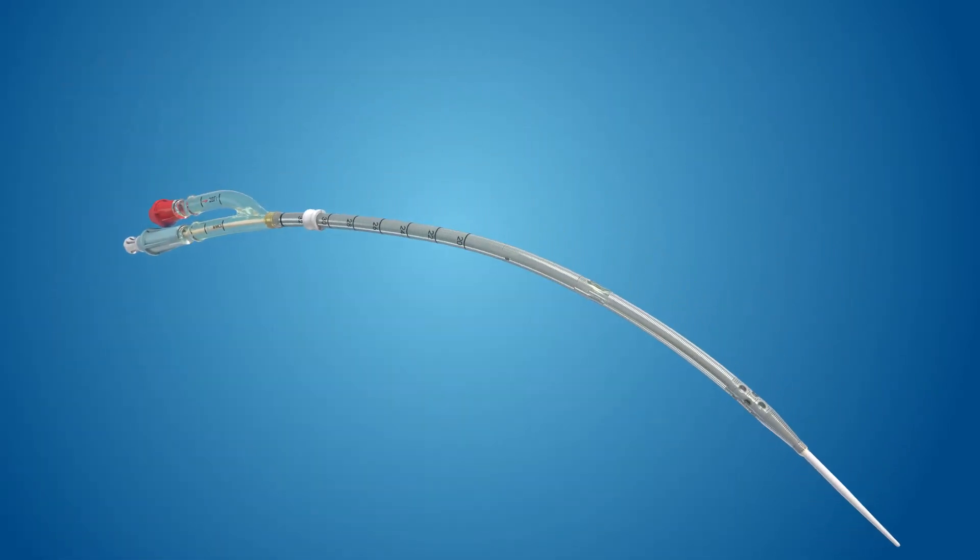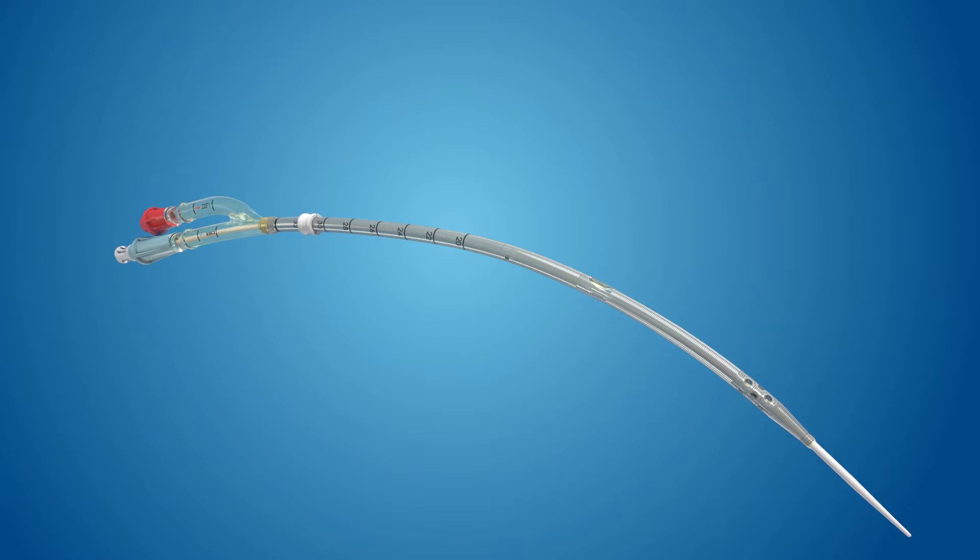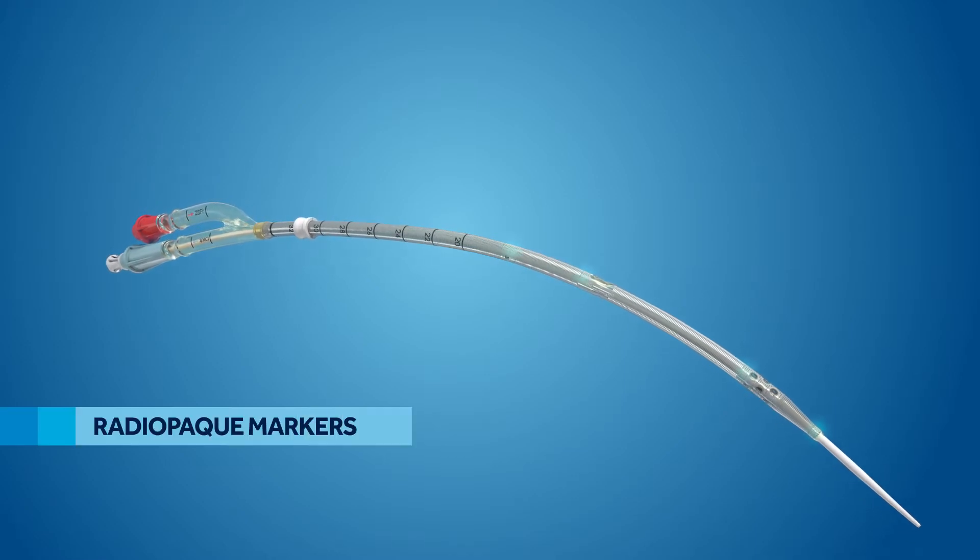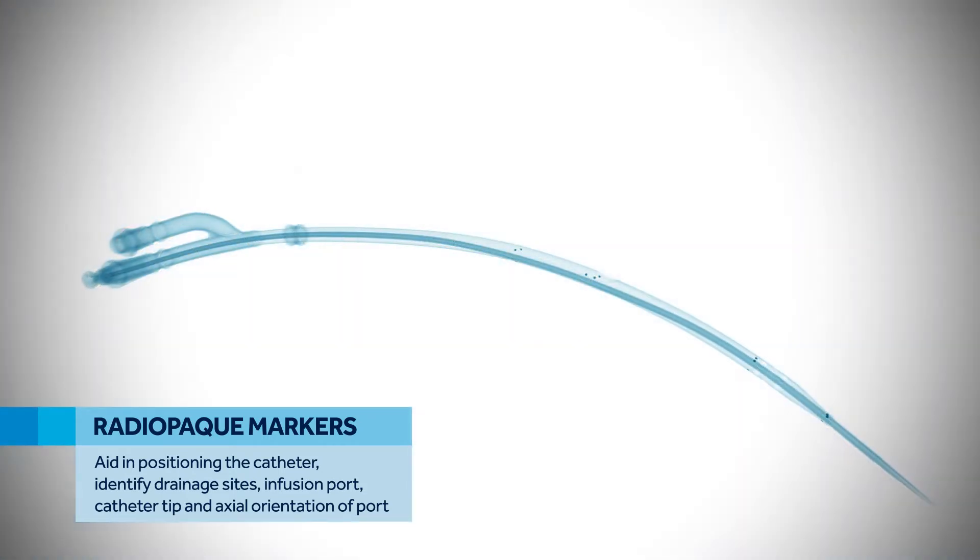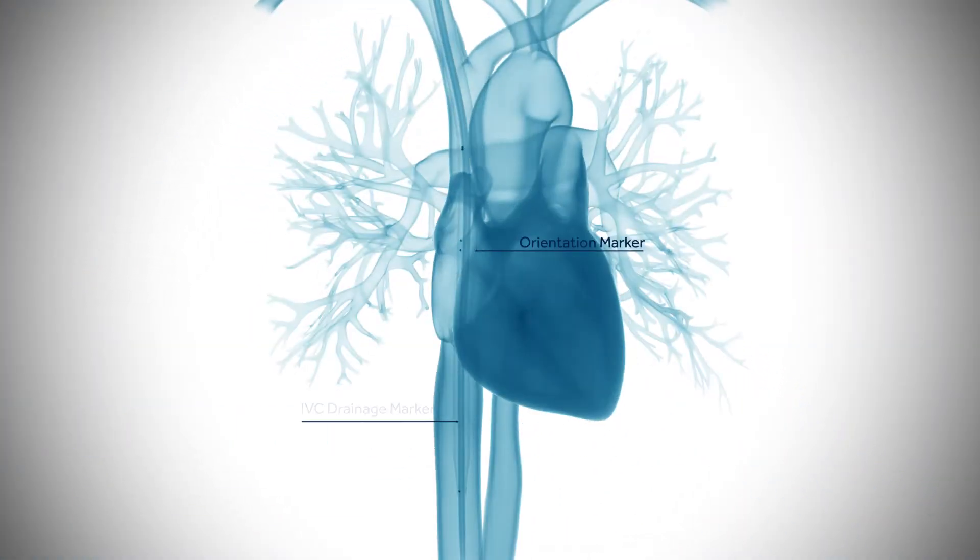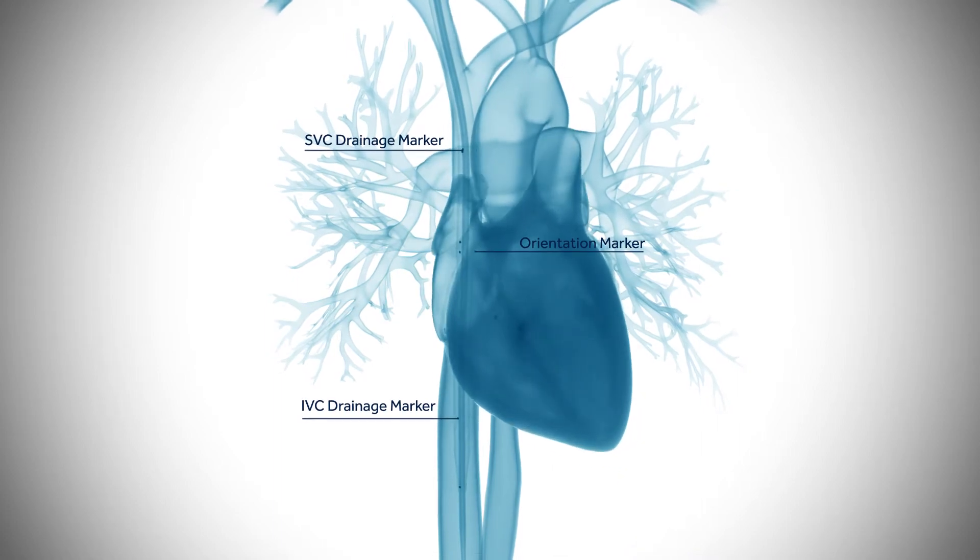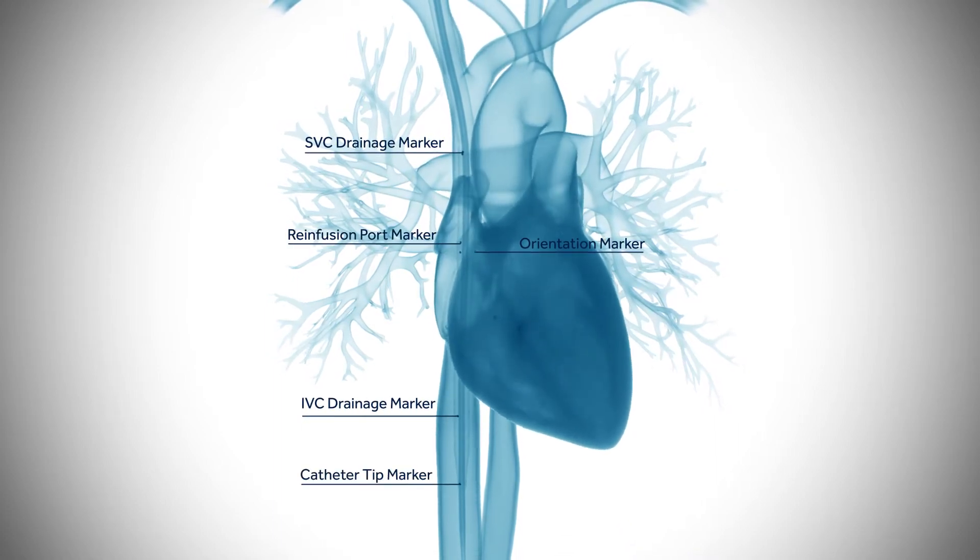Optimal flow begins with correct placement. The Crescent catheter contains radiopaque markers for improved visualization. Under radiographic imaging, these markers aid in positioning the catheter and identifying drainage sites, infusion port, and the catheter tip. The markers also identify axial orientation of the infusion port.